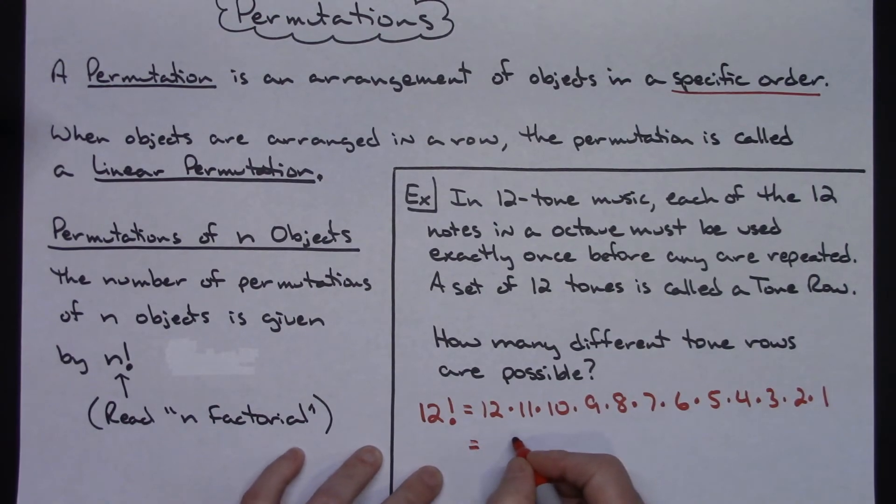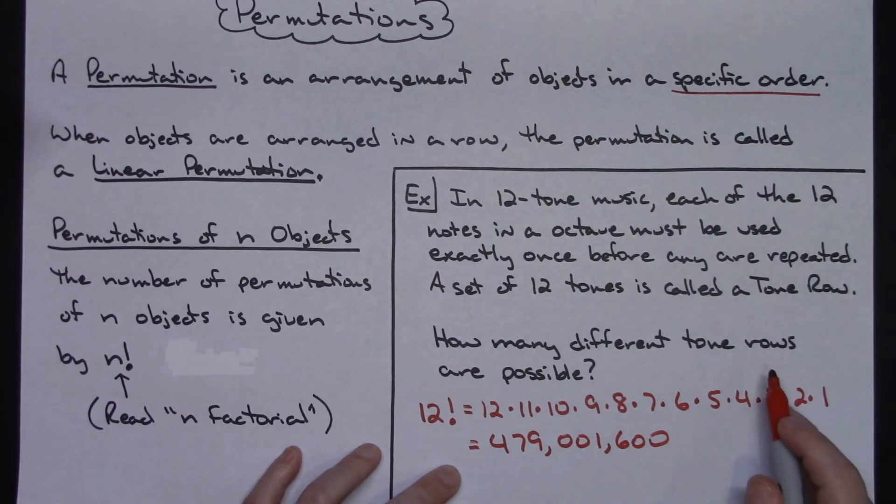This turns out to be 479,001,600. So that's how many different tone rows are possible.